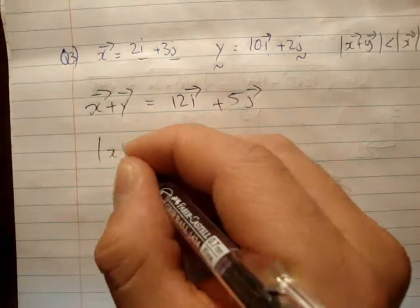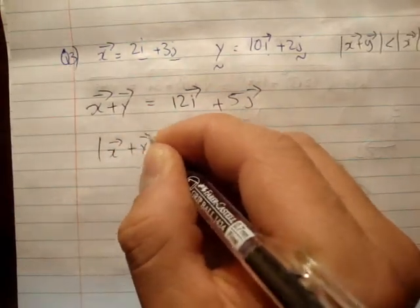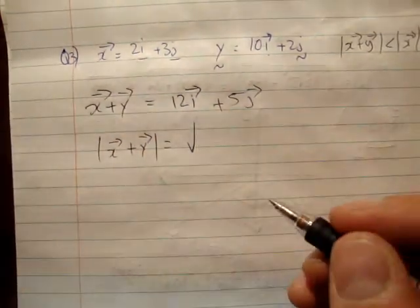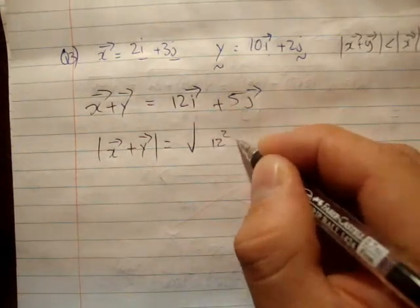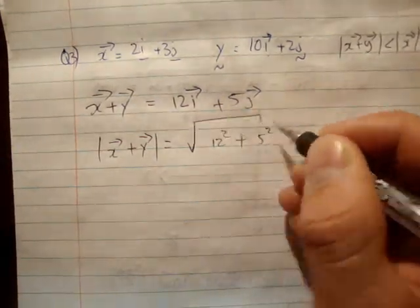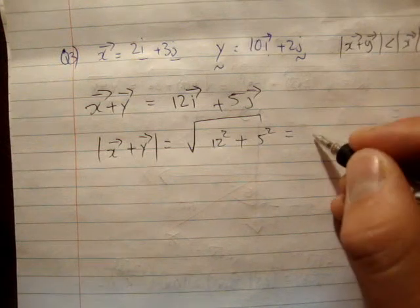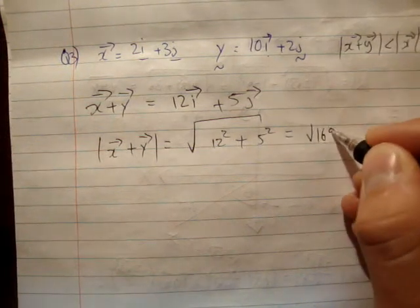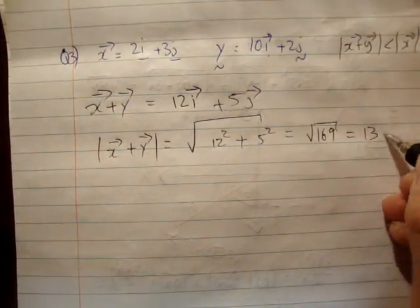The magnitude of x plus y is equal to the square root of 12 squared plus 5 squared, which is equal to the square root of 144 plus 25, equals 169, which is 13.